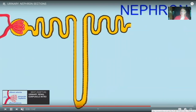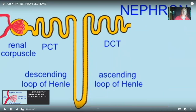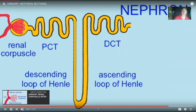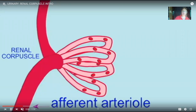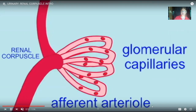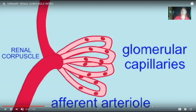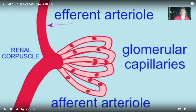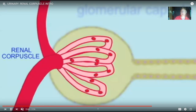Nephrons do three things: they filter the blood — which occurs at the renal corpuscle. Blood passes through the glomerular capillaries and stuff comes out, including urea, the waste we're trying to get rid of. This filtrate, including urea, is directed toward the first part of the renal tubule. The capillaries here are more porous than average — they have larger spaces called fenestrations, so these are fenestrated capillaries.